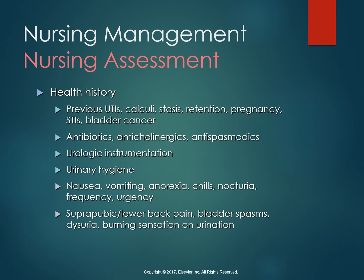Assessment of the patient with UTI involves taking a thorough history — seeing if they have previous UTIs or other complications that would predispose them, as listed in table 45.2. Ask what antibiotics they're on, which might hint at past UTIs. See if they have a catheter or had a recent cystoscopy. Ask about hygiene. Then ask about symptomology: the lower urinary tract symptoms, or possible pyelonephritis symptoms, which are fever, chills, and flank pain.